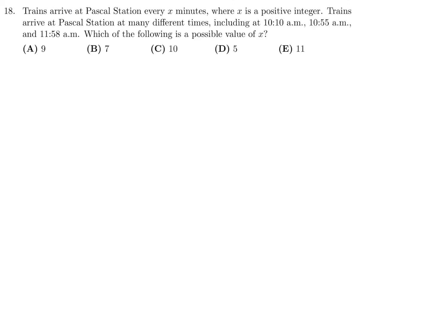Trains arrive at Pascal station every x minutes, where x is a positive integer. Trains arrive at Pascal station at many different times, including 10:10 a.m., 10:55 a.m., 11:58 a.m. Which is the following is the possible value of x? When you're going from 10:10 to 10:55, that is 45 minutes. So whatever x is, it has to be one of the divisors of 45.